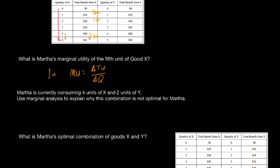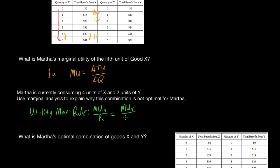Next question: Martha is currently consuming 4 units of X and 2 units of Y. Use marginal analysis to explain why this combination is not optimal for Martha. To answer this we need to revisit the utility maximization rule. The rule says that to maximize total utility, a consumer should consume where the marginal utility of each good divided by its price are equal — that is, MU_X / P_X = MU_Y / P_Y.